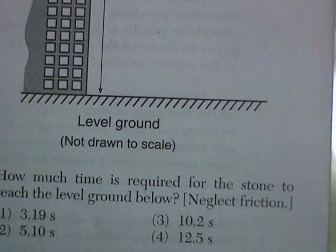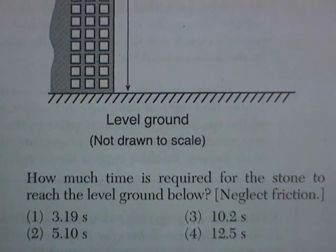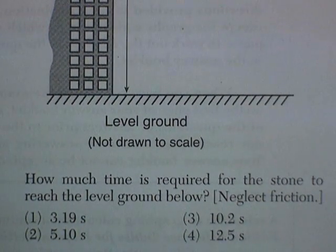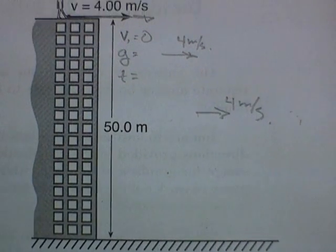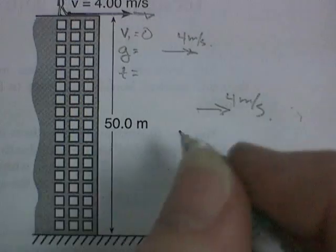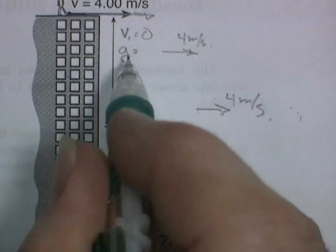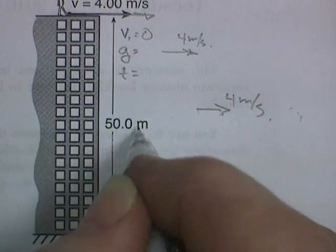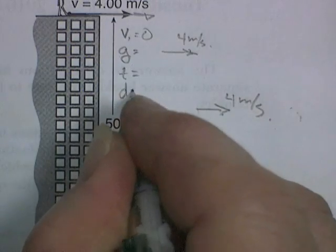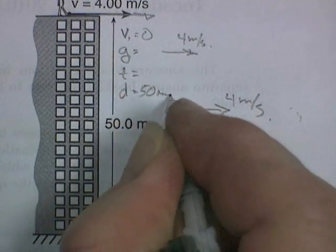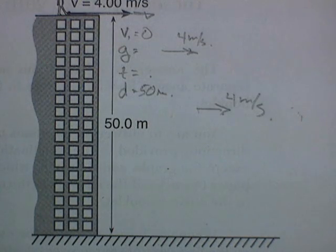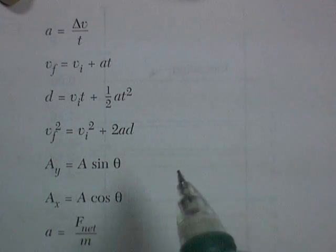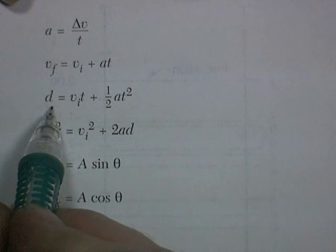Alright, let's see what question they're going to ask. How much time is required for the stone to reach the level ground below? Okay, we don't need the 4 meters per second because we're just dealing with up and down. So let's get this initial velocity is 0. Acceleration, we know distance. Distance is 50 meters. And we're looking for time. And we're looking for time. Initial velocity is 0 going downwards is important.